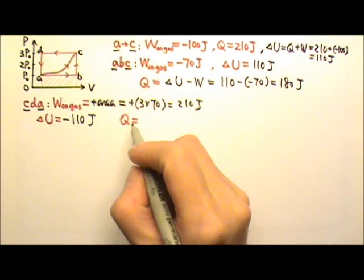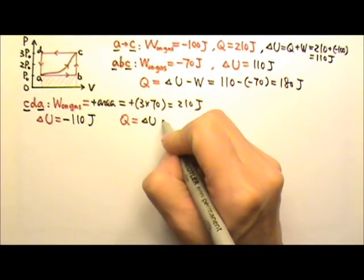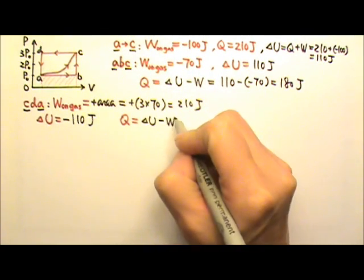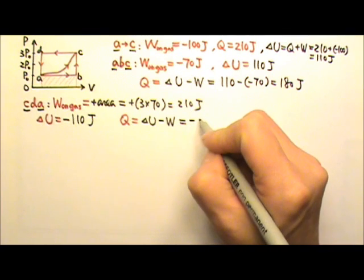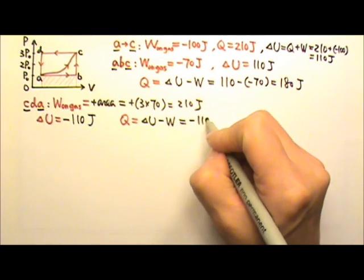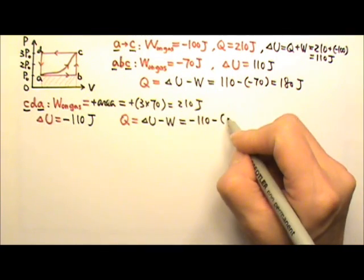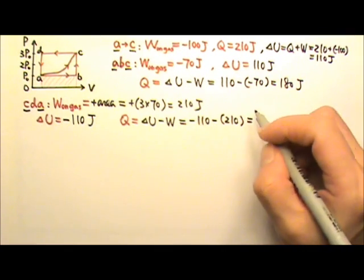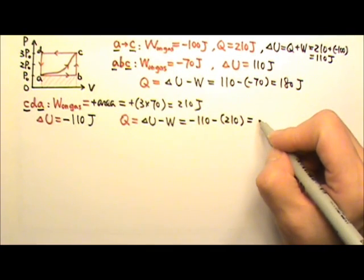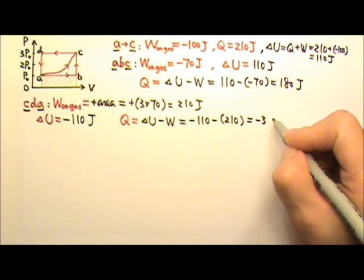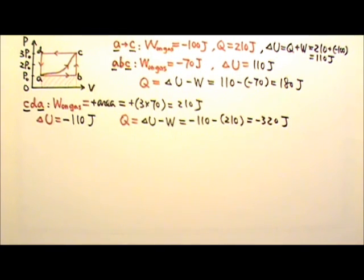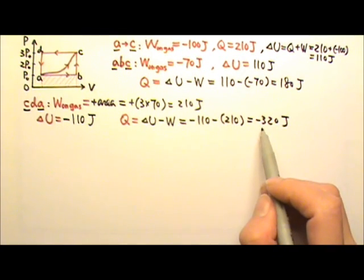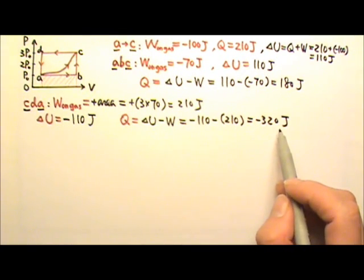So Q, which is delta U minus W, would be negative 110 minus 210. The Q is negative 320 joules. This means 320 joules of heat is removed from the gas.